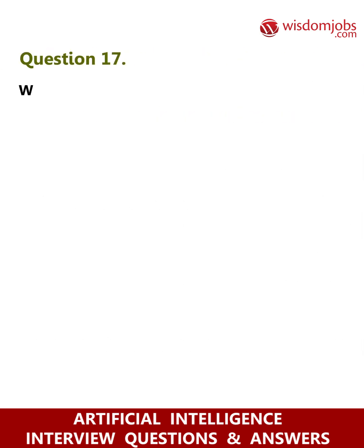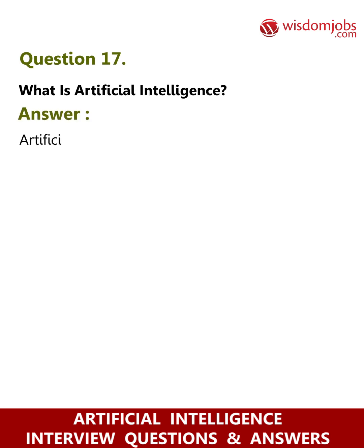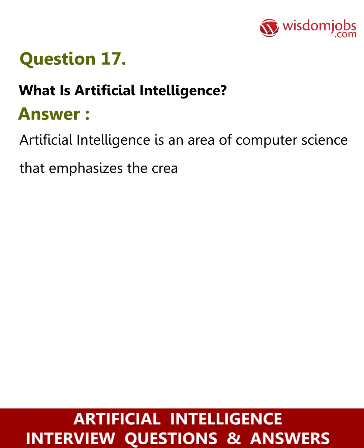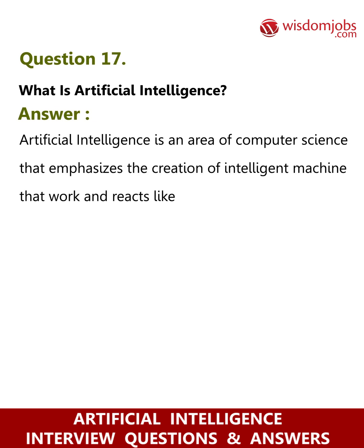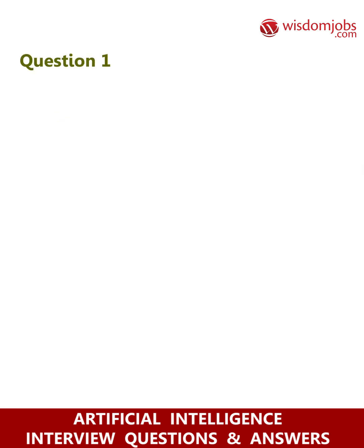Question 17: What is artificial intelligence? Answer: Artificial intelligence is an area of computer science that emphasizes the creation of intelligent machines that work and react like humans.